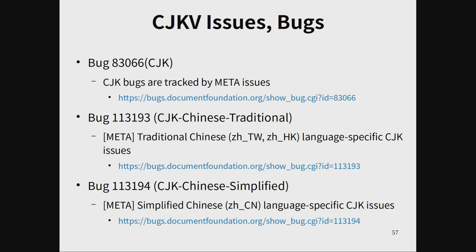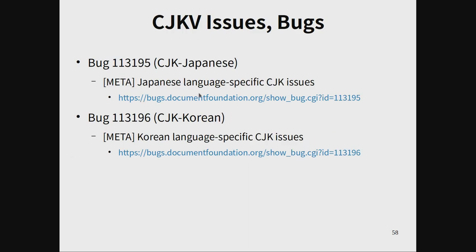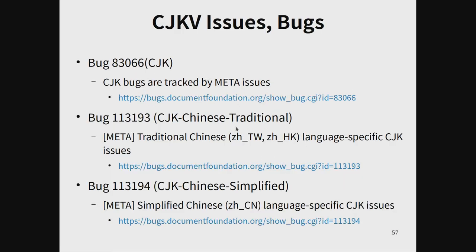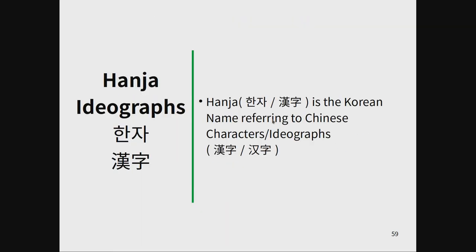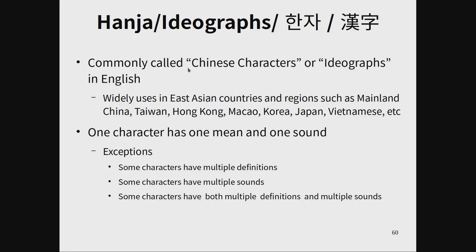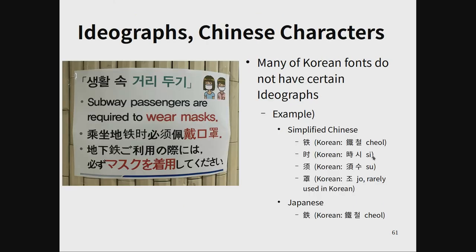This is the Europe-operated CJK bug list. CJK includes Traditional Chinese, Simplified Chinese, Korean, and Japanese. Hanja is the Korean name for Chinese character ideographs, commonly called Chinese characters. One character has one meaning and one sound, but also multiple definitions and multiple sounds. Many Korean fonts do not have certain ideographs.